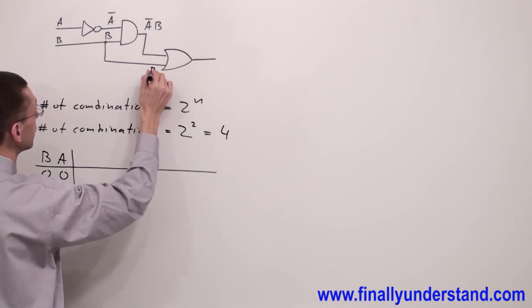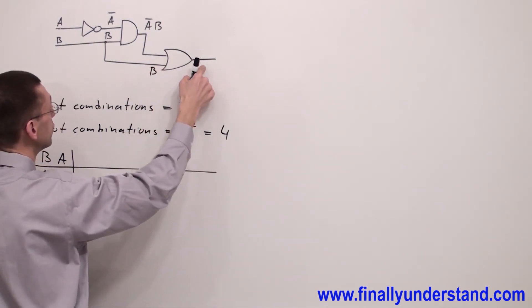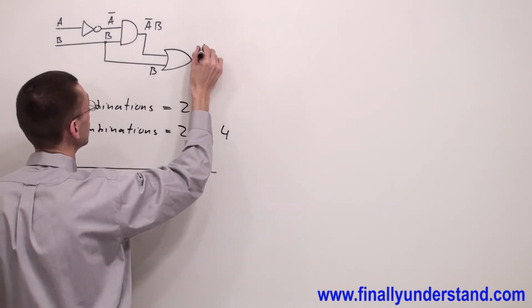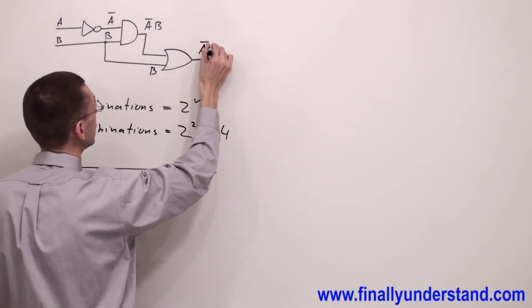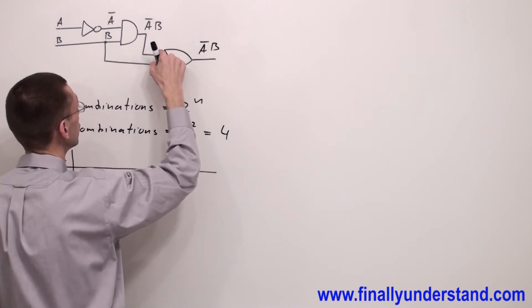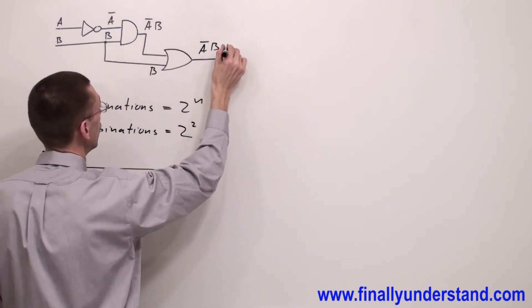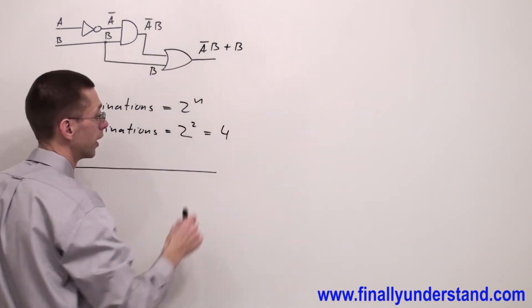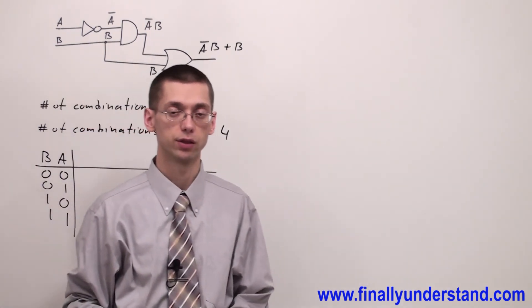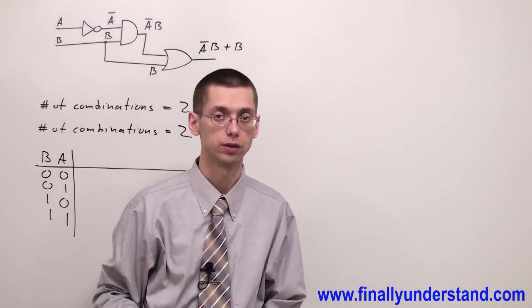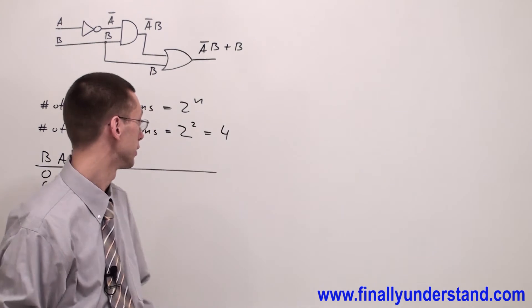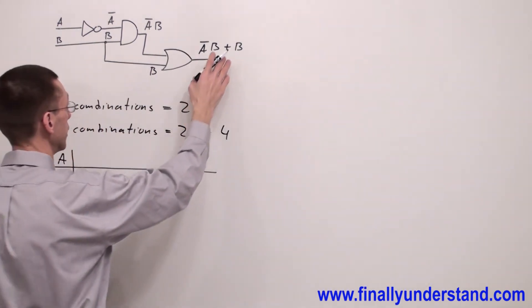And at the output of the OR gate, I'm going to have A'·B, whatever comes to this input, OR B. At this moment, I'm not going to use Boolean algebra to simplify the output function. I'm going to just find the truth table for whatever is over here.